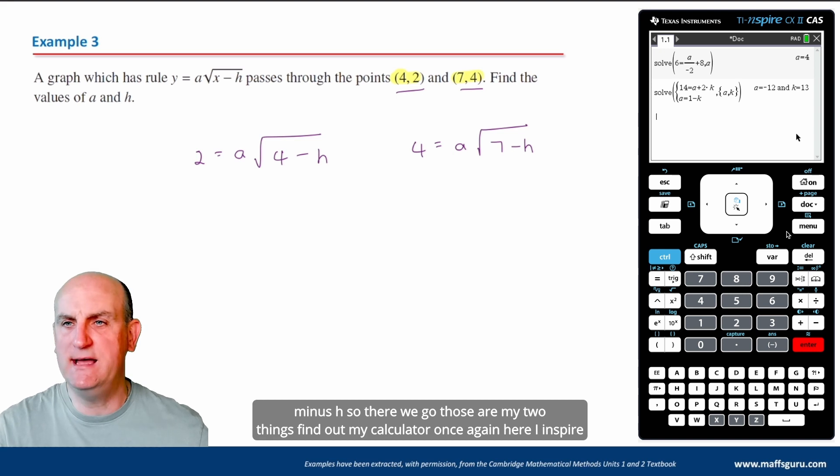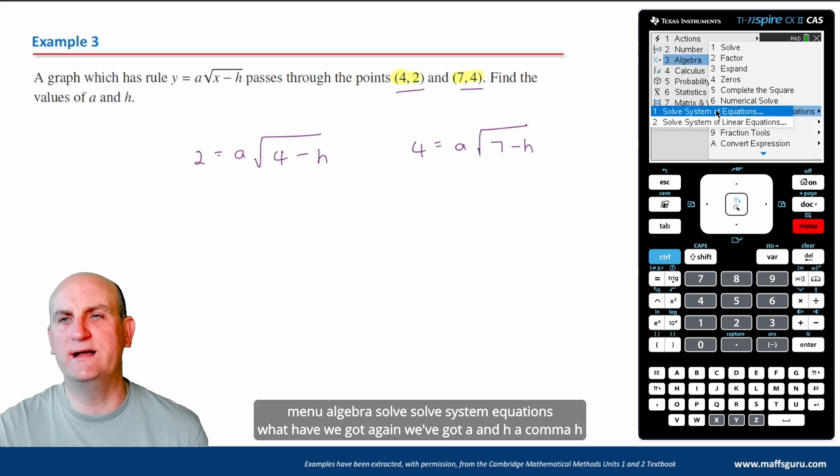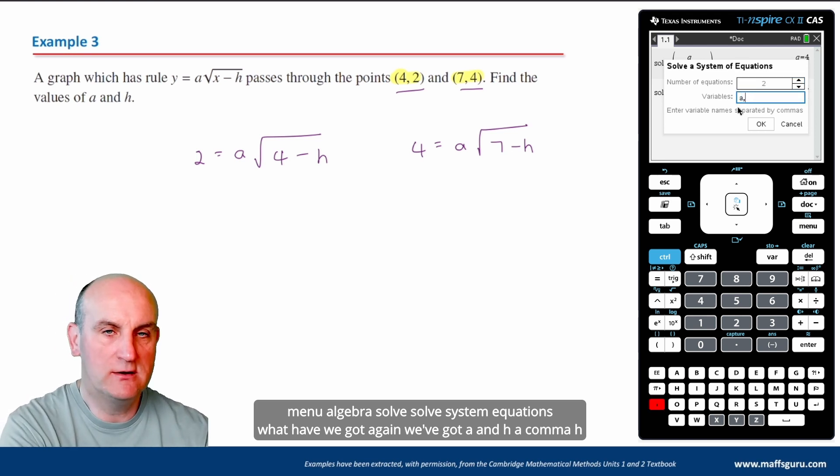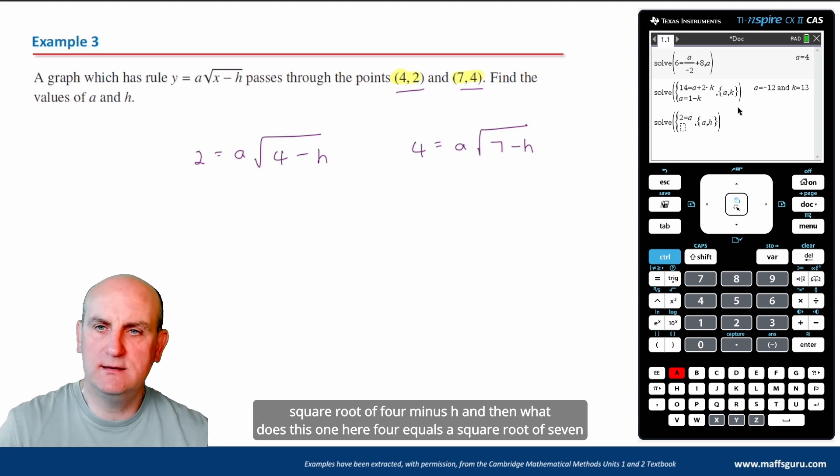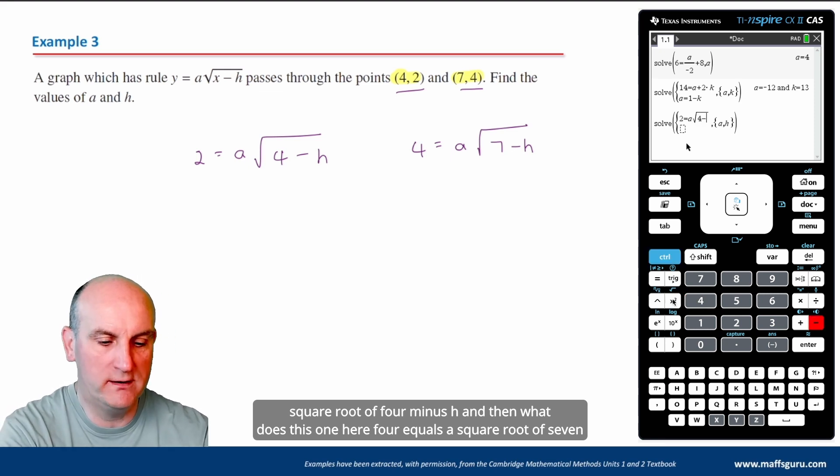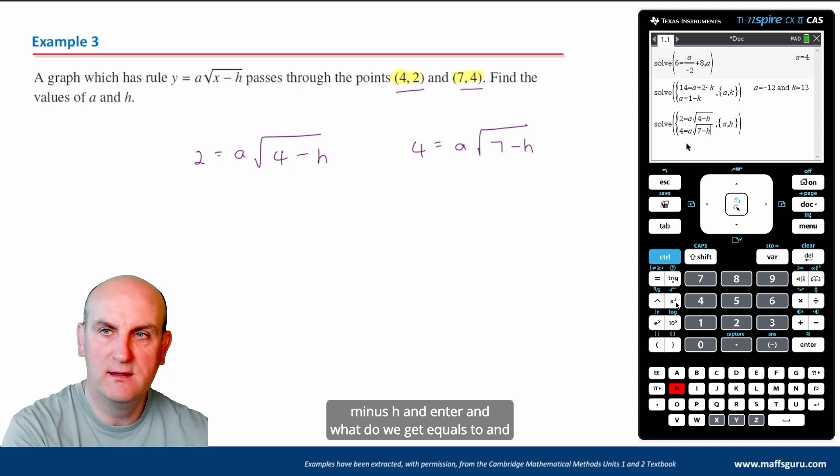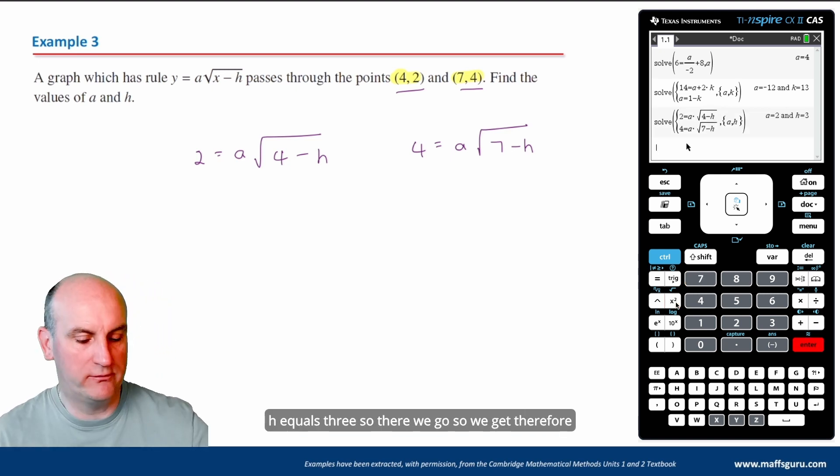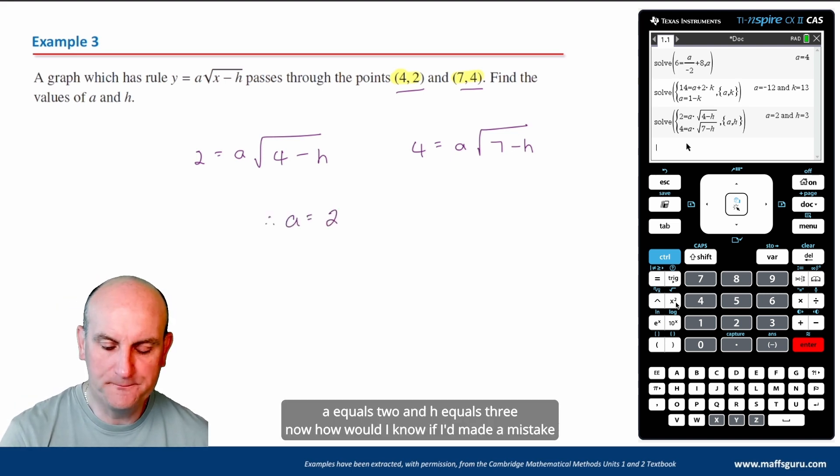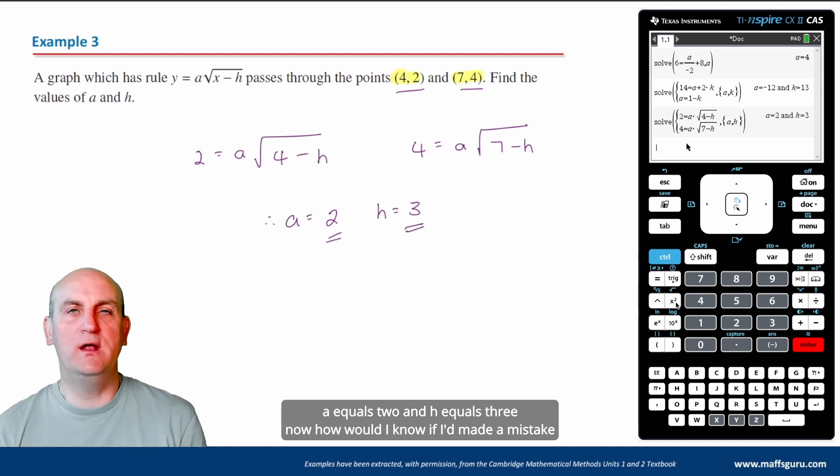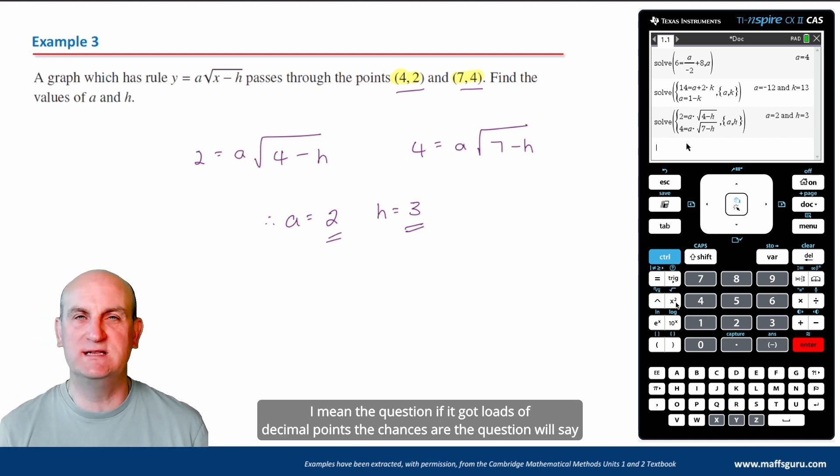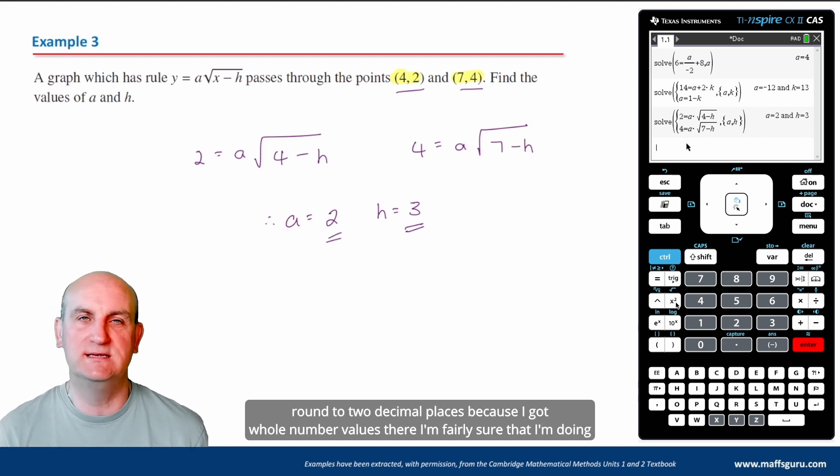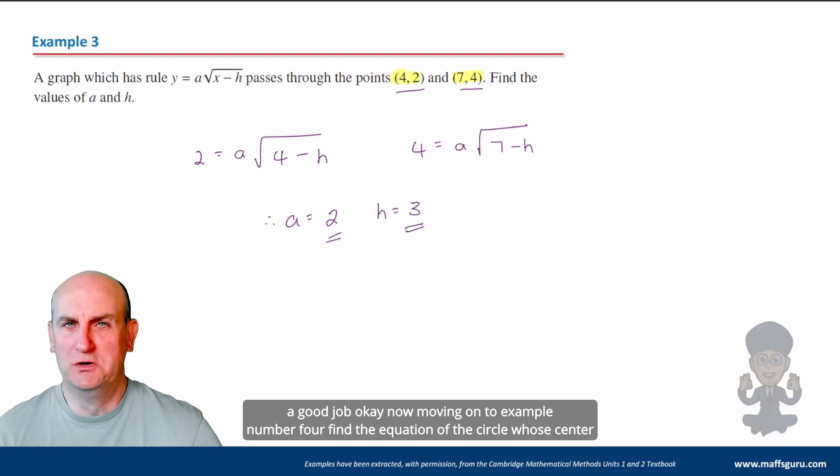Fire up my calculator. Once again, TI Inspire. Menu, Algebra, solve, solve system equations. What have we got again? We've got a and h. A comma h. Hit enter. And then let's put my equations in. 2 equals a√(4-h). And then what is this one here? 4 equals a√(7-h). Hit enter. And what do we get? A equals 2 and h equals 3. So there we go. So we get therefore a equals 2 and h equals 3. Now, how would I know if I'd made a mistake? Because my values that came out would be somewhat random. Yes. And also you always want to make sure. I mean, the question, if it got loads of decimal points, the chances are the question will say round to two decimal places. Because I got a whole number of values there, I'm fairly sure that I'm doing a good job.